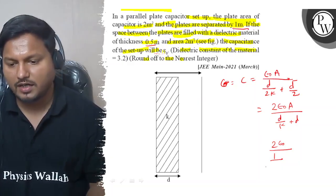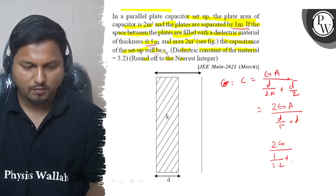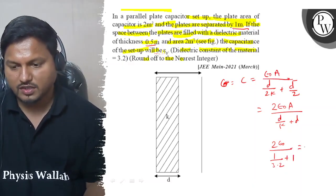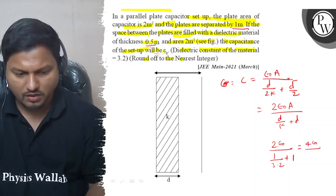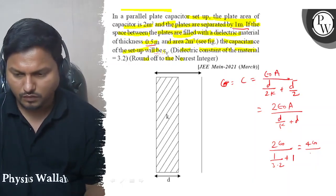This is saying 1 meter and k is 3.2 plus 1. 1 means d, and this is 4 into epsilon 0 divided by 4.2.